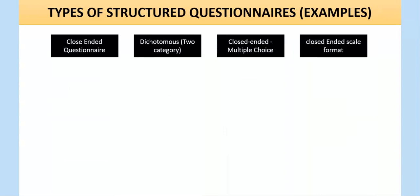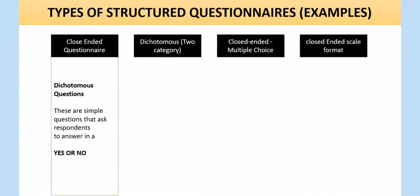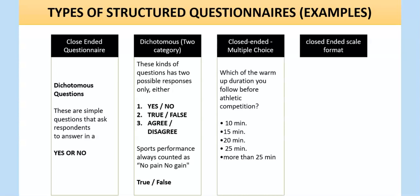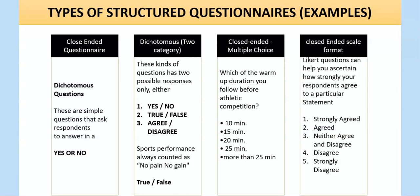For structured close-ended questionnaires, dichotomous questions have two possible responses — yes or no, true or false, agree or disagree. Another type is multiple choice — for example: which warm-up duration do you follow before athletic competition? Options: 10 minutes, 15 minutes, 25 minutes, or more than 25 minutes. Close-ended Likert scale questions show: strongly agree, agree, neither agree nor disagree, disagree, strongly disagree. The scale can be 7-point or 10-point as required.